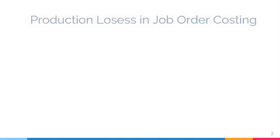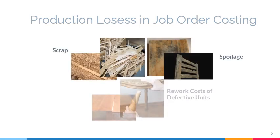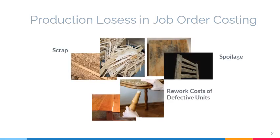Production losses can be generally classified into three types: scrap, spoilage, and rework of defective units.